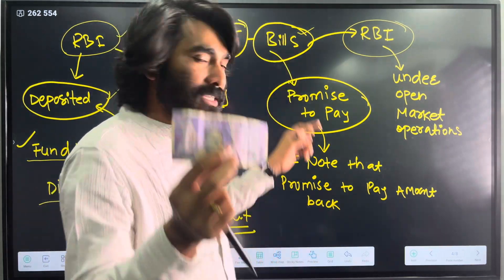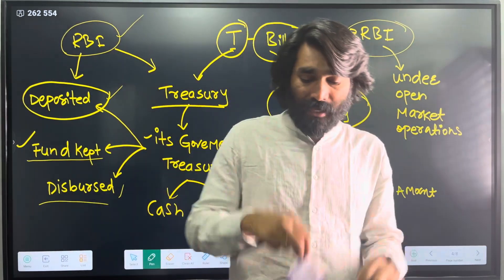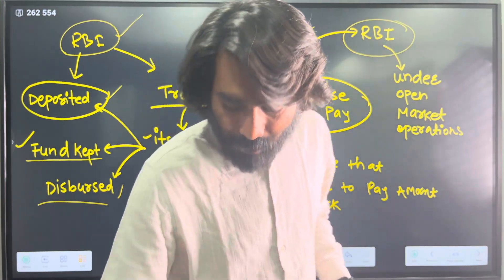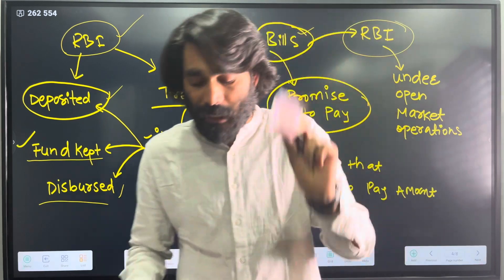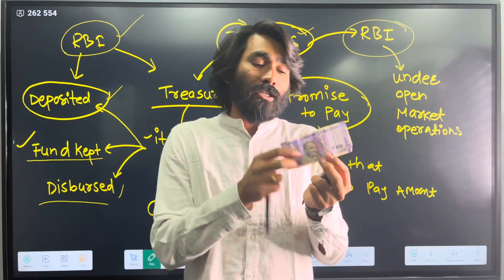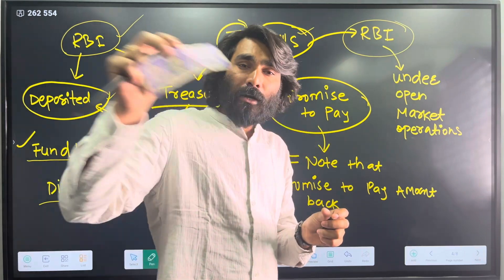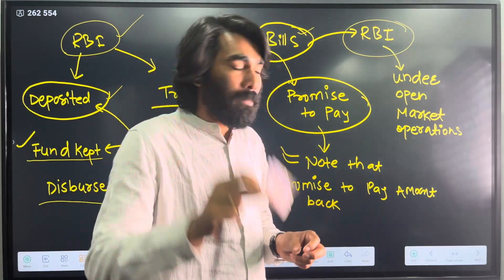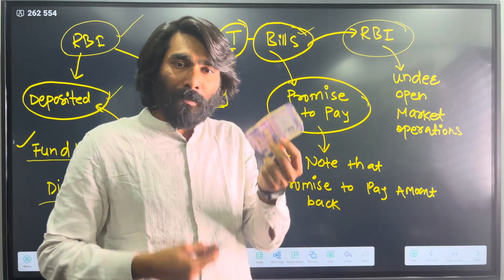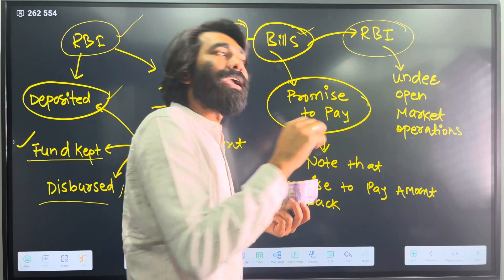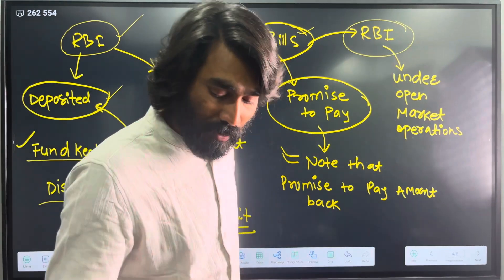A bill is a note — a promise to pay an amount. Just look at a currency note: it says 'I promise to pay the bearer the sum of 100 rupees.' Similarly, a T-bill paper carries value. I have two papers — one ordinary paper has no value, but a currency note carries 100 rupees of value. When you transfer it, that person receives 100 rupees against that paper. T-bills work the same way: a government-issued paper at a discount of 90 is redeemed at face value of 100.